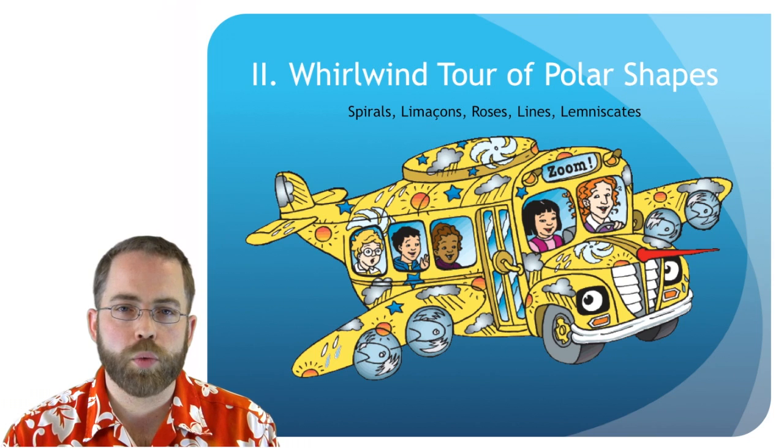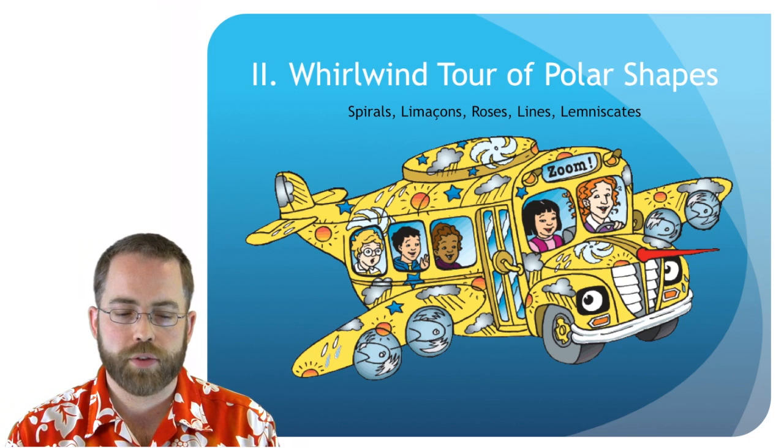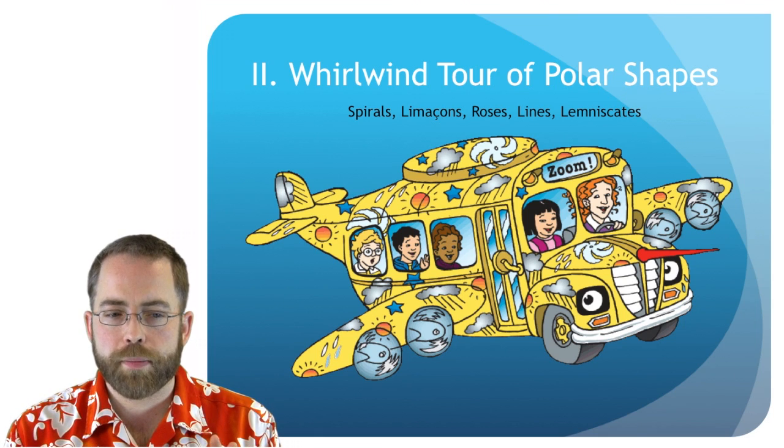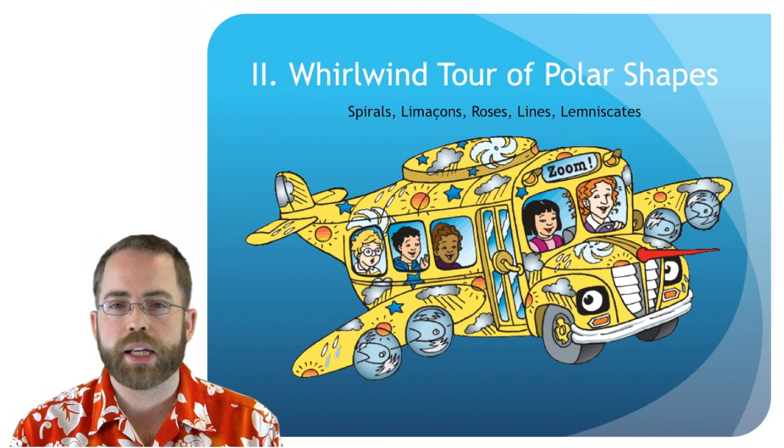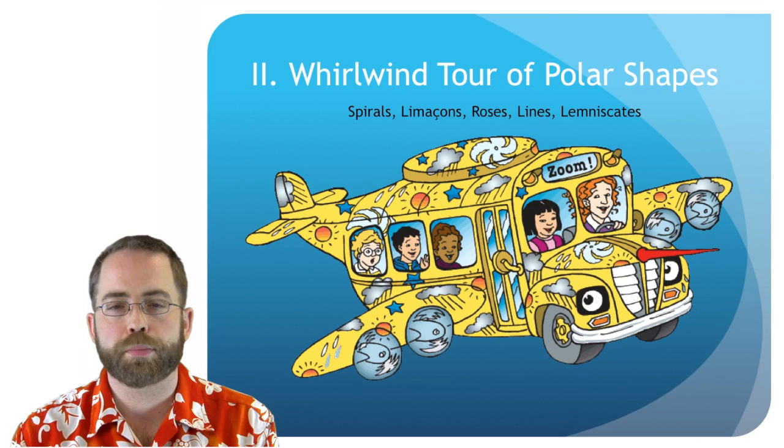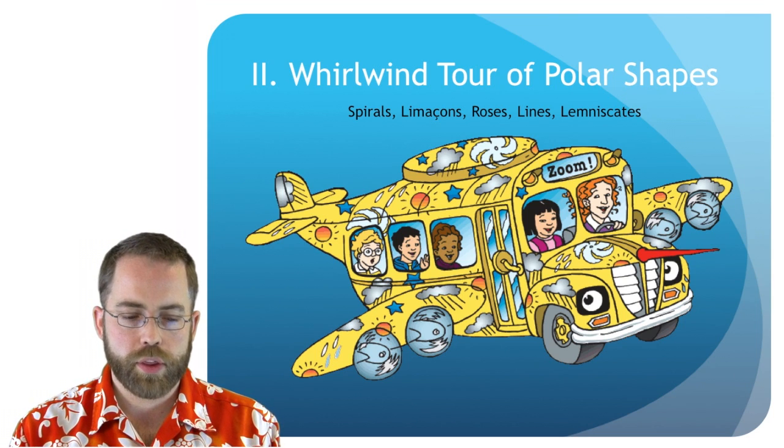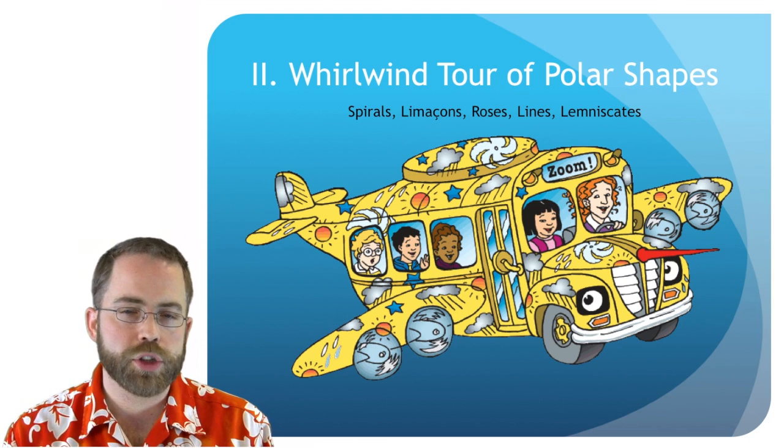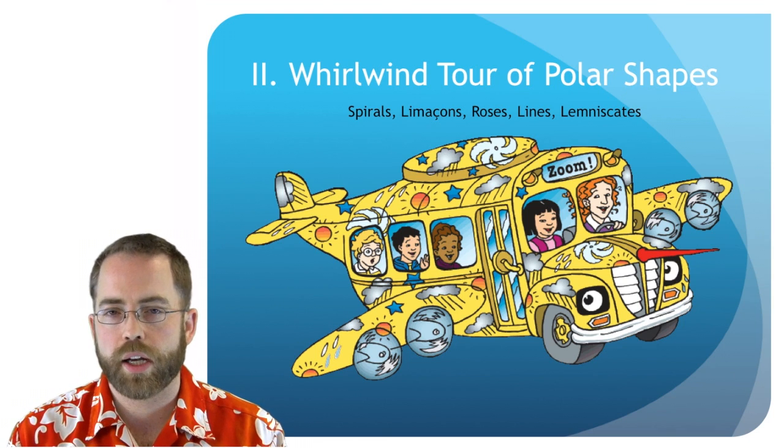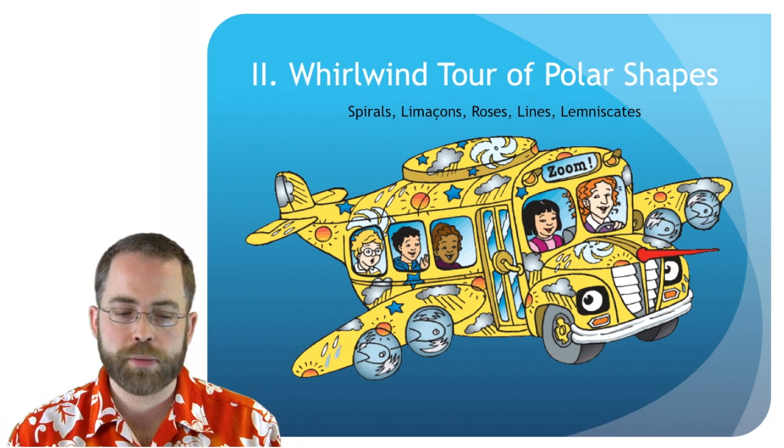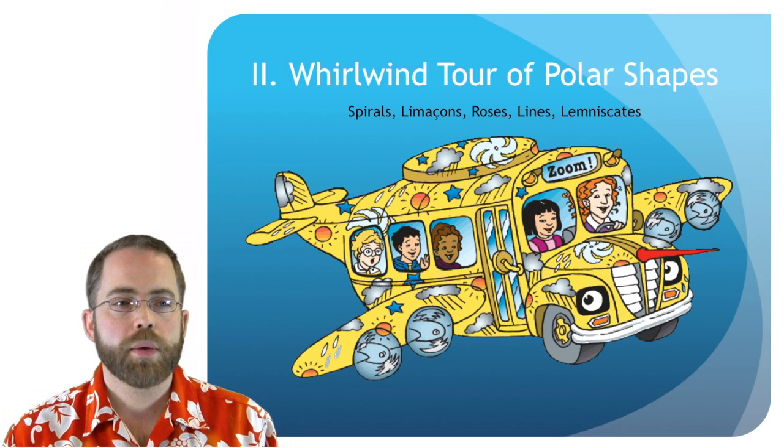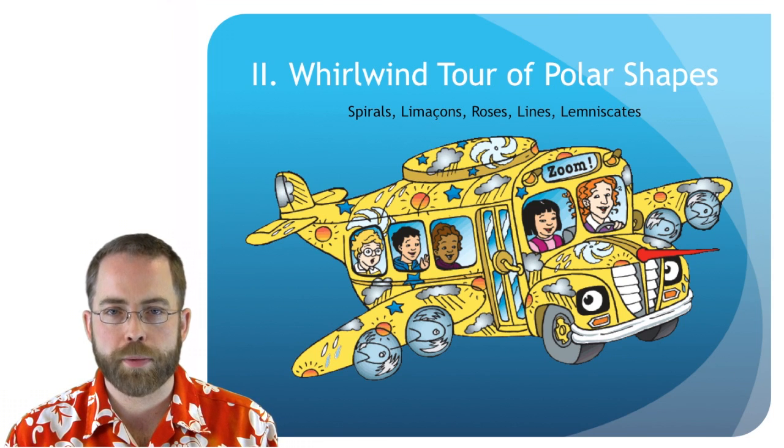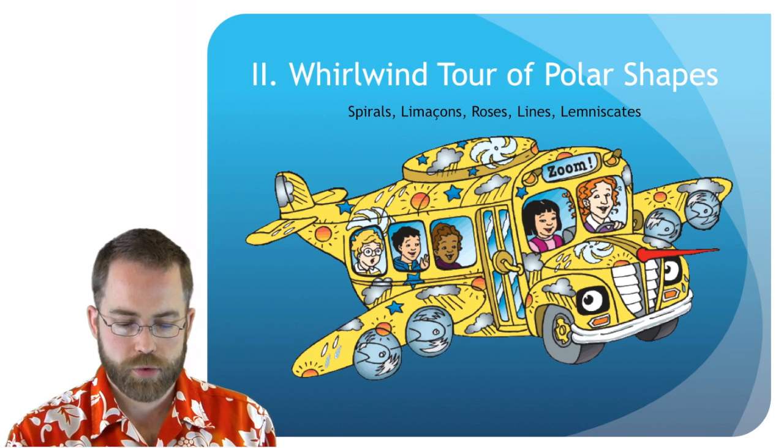All right, part two. We are going to have the whirlwind tour on the magic school bus of all these different functions. This is something that you don't need to be an expert on. You just need to broadly recognize these five different kinds of shapes. You don't need to be able to create them or generate them. You just need to recognize what these different shapes are. Some of them you've seen before. Most of them you haven't. But that's why this is here to help you orient towards new shapes in polar.